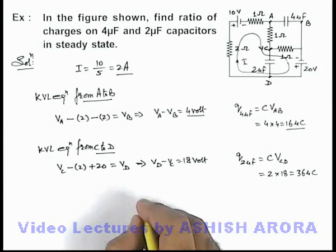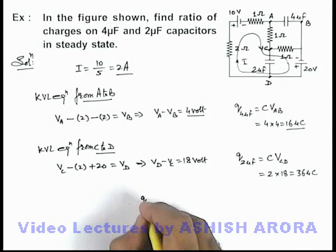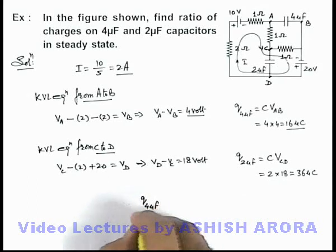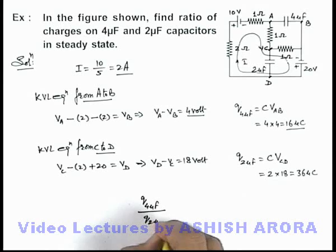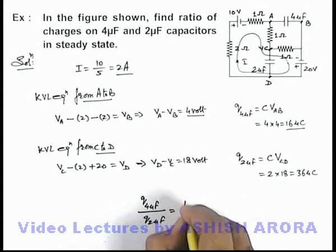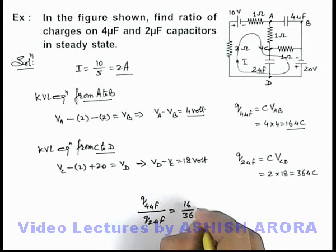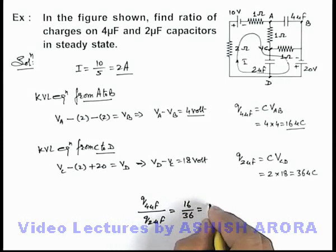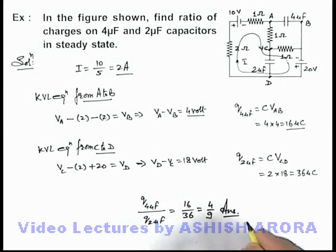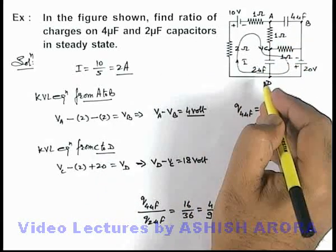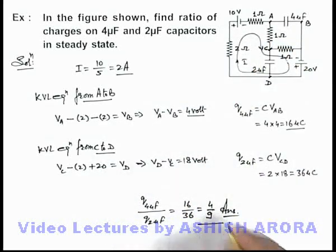So in this situation if we find out the ratio of charges on 4 micro farad to the charge on 2 micro farad capacitor that can be given as 16 by 36. On further simplifying this is 4 by 9 that will be the answer to this problem. That is in steady state the ratio of charges on 4 and 2 micro farad capacitor will be 4 by 9.